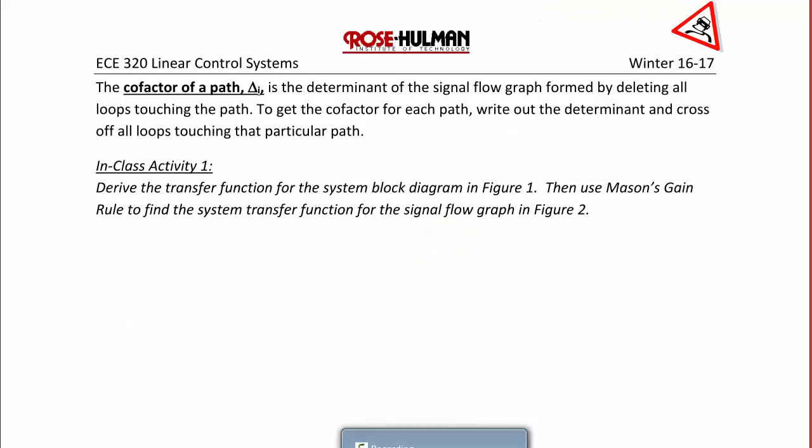The cofactor of a path, Δ_i, is the determinant of the signal flow graph formed by deleting all loops touching the path. To get the cofactor for each path, write out the determinant and cross off all loops touching that particular path.